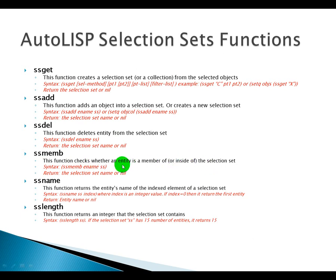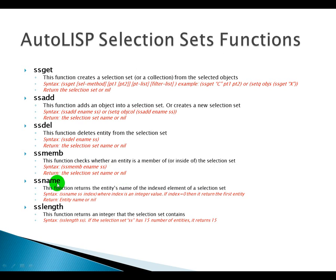SSMemb checks whether an entity is a member of — or inside — a selection set. The syntax is: (ssmemb ename ss). If the entity name is found within the selection set, it returns the entity name; if it cannot find it inside the selection set, it returns nil.